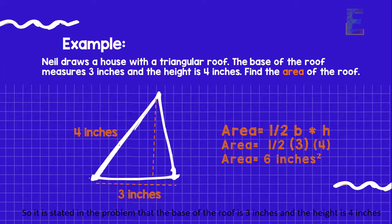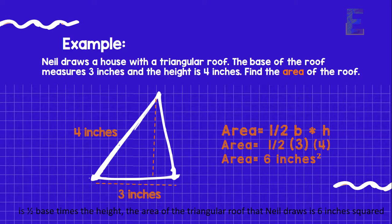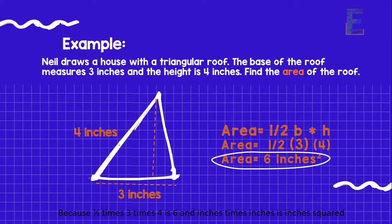So it is stated in the problem that the base of the roof is 3 inches and the height is 4 inches. Therefore, applying the formula in finding the area of the triangle which is 1 half base times the height, the area of the triangular roof that Neil draws is 6 inches squared. Because 1 half times 3 times 4 is 6 and inches times inches is inches squared.